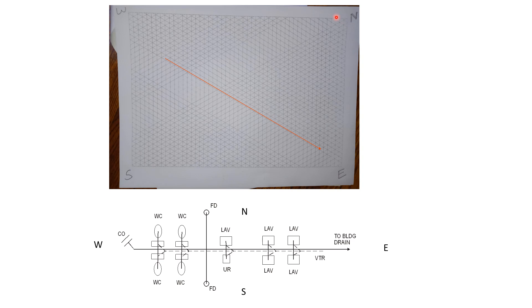On your isometric paper I want you to get used to putting north at the top right, south at the bottom left, west at the top left, and east at the bottom right. And on your plan view, north at the top, south at the bottom, west on the left, east on the right.